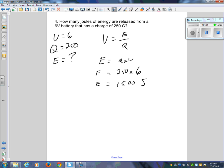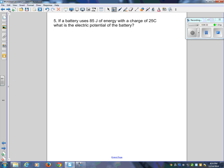Last question. A battery uses 85 joules of energy with a charge of 25 coulombs, what is the electric potential of the battery, or voltage? We have energy, 85. Charge, 25. Solving for V, question mark.